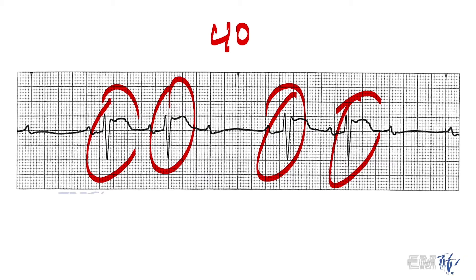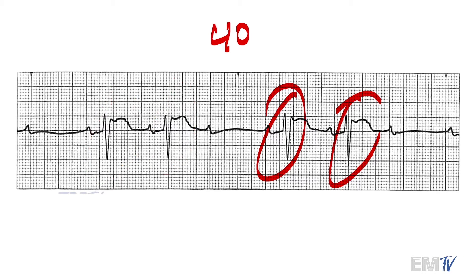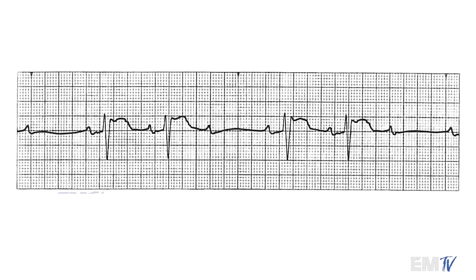One other thing you should notice here is you're seeing more P waves than there are QRS complexes. This should immediately clue you in that this is some sort of heart block. More specifically, this is usually going to be a variation of a second-degree heart block.